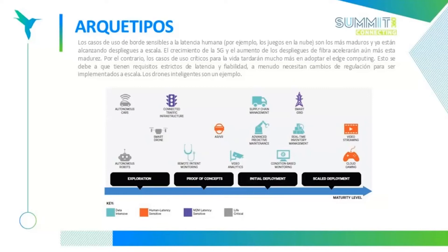Por ejemplo, los drones inteligentes que soñamos que nos entreguen productos están todavía en una fase de exploración, junto con los autos autónomos y robots autónomos. No podemos permitir que un auto no reciba la información necesaria si no hay un ser humano conduciéndolo; no es una vía férrea donde un computador controla un tren en una sola ruta y el sistema interno comunica a los trenes que vienen atrás que se detengan en caso de accidente.